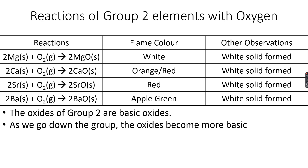Now, reactions of group 2 elements with oxygen. The general pattern is that the element reacts with oxygen to form the oxide of the element. For example, magnesium reacts with oxygen to form magnesium oxide, calcium reacts with oxygen to form calcium oxide, and strontium reacts with oxygen to form strontium oxide.